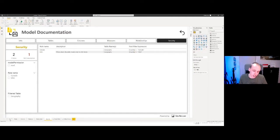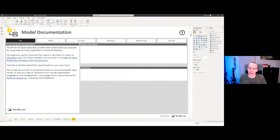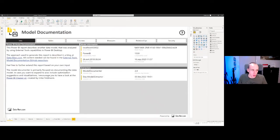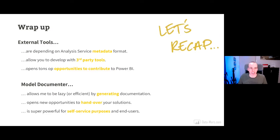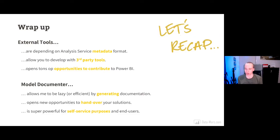This summarizes what Model Documenter exports today. The two deleted relationships were related to perspectives, which I hope to add soon once the relationship bug is fixed. In summary: external tools depend on the Analysis Services metadata format and the Power BI analysis services format; they allow development with third-party tools like Tabular Editor or SQL Server Management Studio; they open up community contribution opportunities; and you can start building your own tool with something as simple as PowerShell. The official Microsoft documentation on external tools also includes a case showing how to display model information on screen.